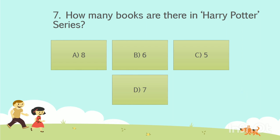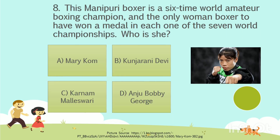The answer is Option D: 7. As on date, 7 books are there in the Harry Potter series. Question number 8. This Manipuri boxer is a 6-time world amateur boxing champion and the only woman boxer to have won a medal in each one of the 7 world championships. Who is she? Option A: Merikom. Option B: Khunjarani Devi. Option C: Karnam Malleshwari. Option D: Anju Bobby George. Your time starts now.